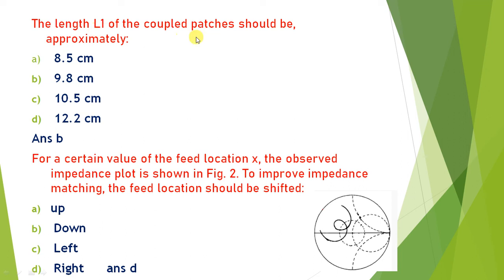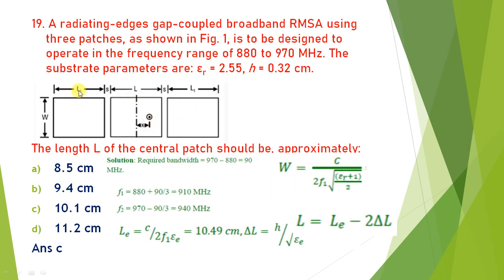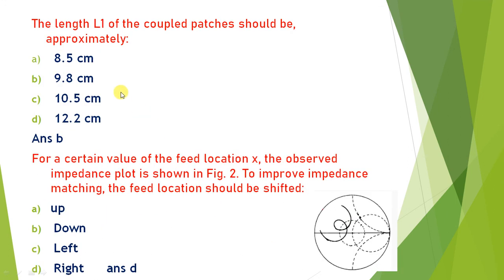The parasitic patch length l1 must be less than the feed patch length l = 10.1 cm. The closest value less than 10.1 is 9.8 cm, so the answer is B. For the Smith chart feed point location, it should be close to the parasitic patch length 9.8 cm, and since the Smith chart loops in the clockwise direction, the feed point should be shifted to the right. Answer is D.